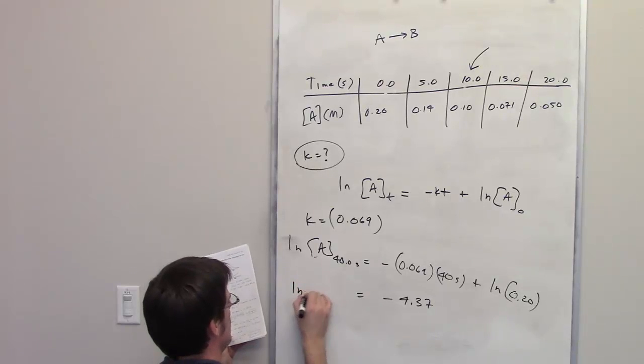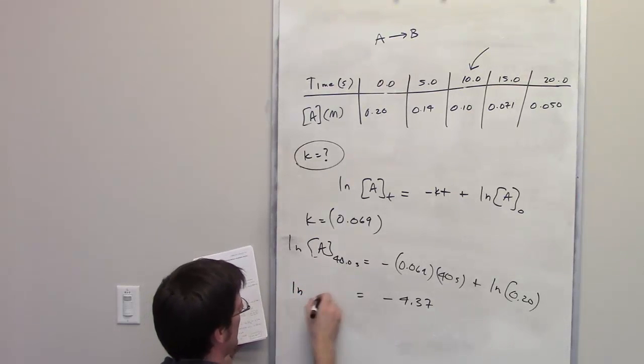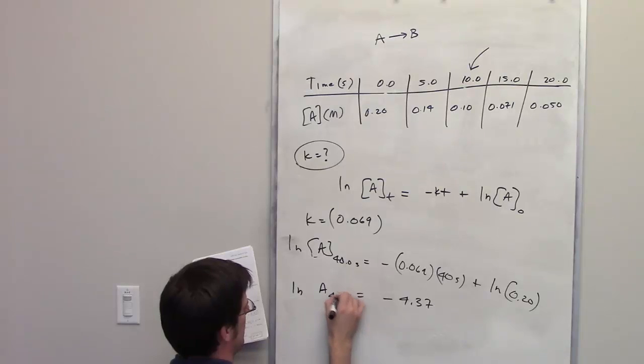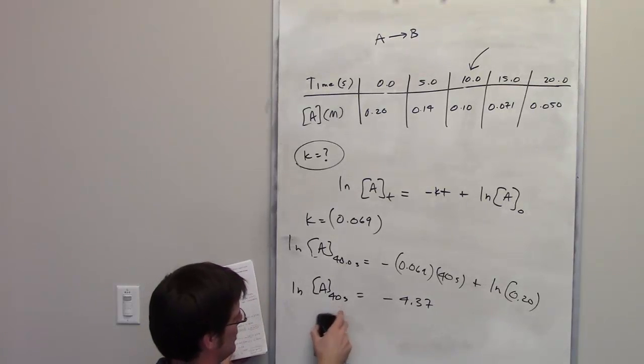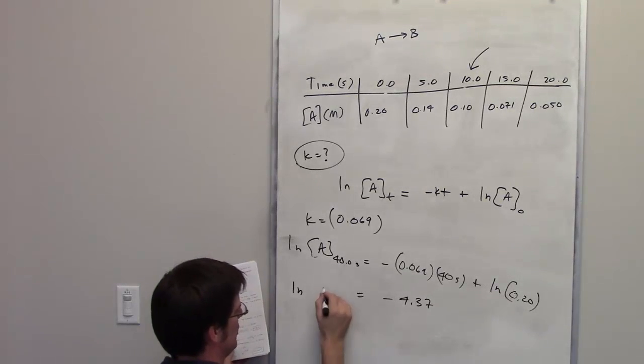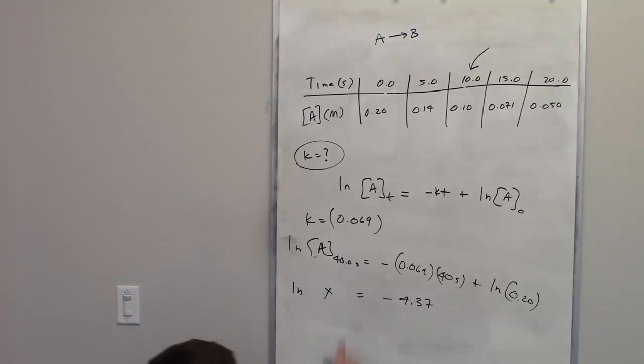I have now leftover the ln of A sub 40, concentration of A sub 40. How in the world do I figure out what this is? And honestly, this is a complicated, dorky-looking term. I'm just going to replace it with the term x. x represents the concentration of A at time 40.